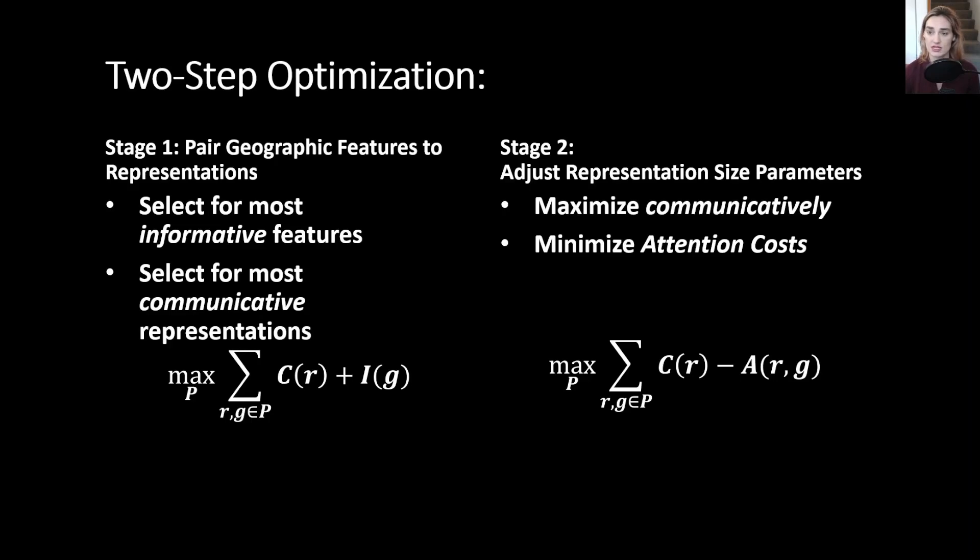In the second stage, we adjust the representations that were chosen in the first stage based off of their different sizing parameters: width, depth, and height. We do this to maximize communicativity while minimizing attention cost.